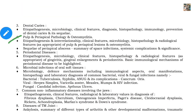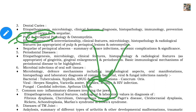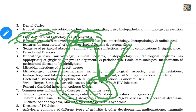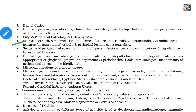The next topic is pulp and periapical pathology and osteomyelitis. Pulp pathology means diseases within the pulp. Periapical means diseases around the apex of the tooth root. Osteomyelitis — 'osteo' means bone, 'myelitis' means infection or inflammation. Since the tooth is in bone, infection can lead to osteomyelitis. For all these, you need to study etiopathogenesis, clinical features, microbiology, histopathology, and radiographic features.